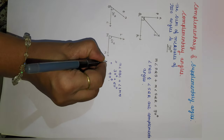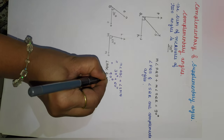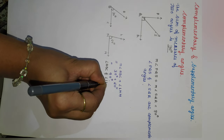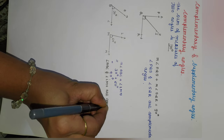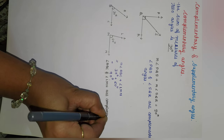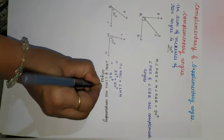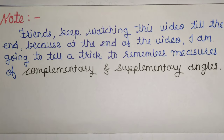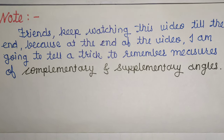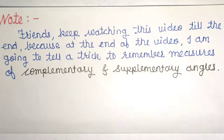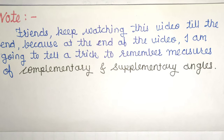Then we will say that angle ABC and angle LMN are complementary angles. Friends, keep watching this video till the end, because at the end of the video I am going to tell a trick to remember the measures of complementary and supplementary angles.